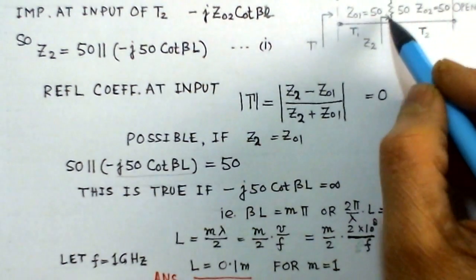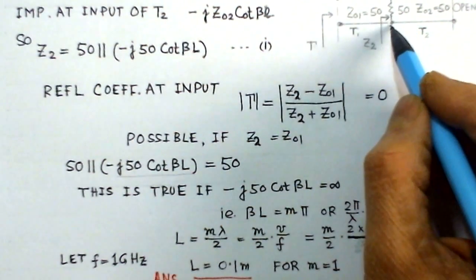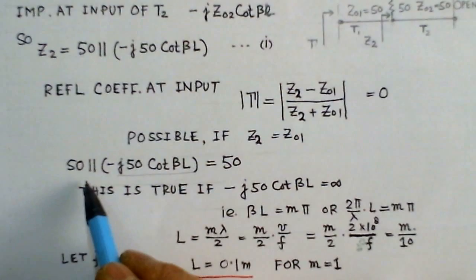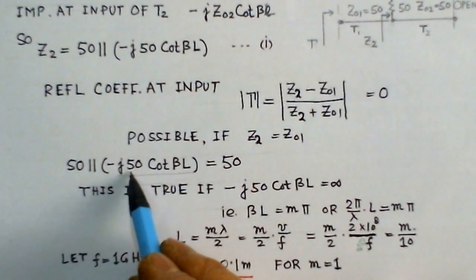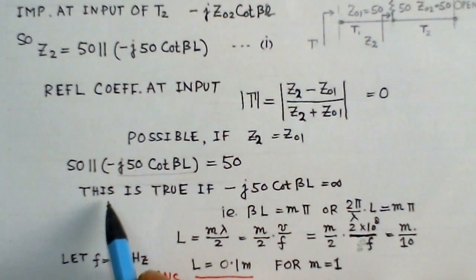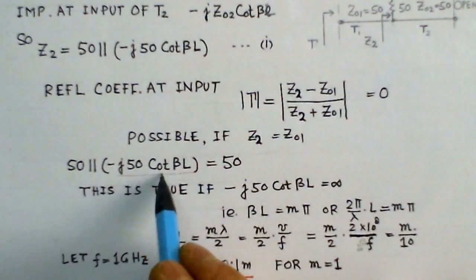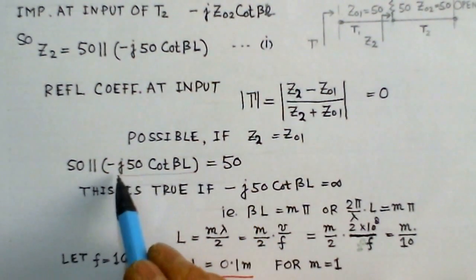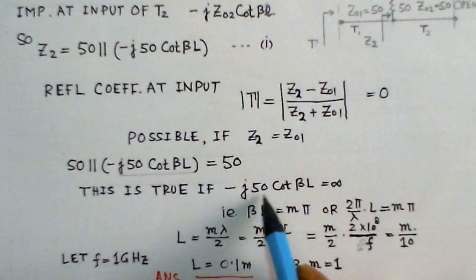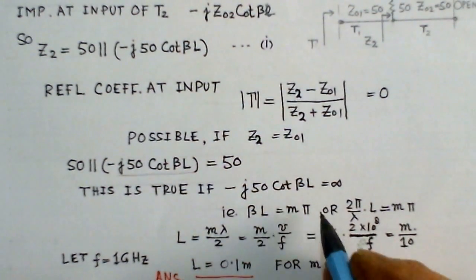Z2 equal to Z01 means the impedance looking into the parallel combination should equal Z01 = 50 ohms. From equation 1, Z2 = 50 in parallel with -j·50·cot(βL), and that must equal 50 ohms. The parallel combination of 50 ohms and -j·50·cot(βL) equals 50 ohms only if -j·50·cot(βL) is infinite. This is true only if cot(βL) is infinite, meaning βL must equal multiples of Mπ, where M = 0, 1, 2, 3, and so on.